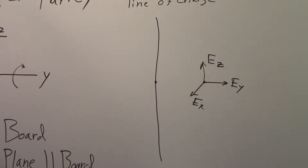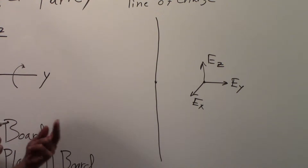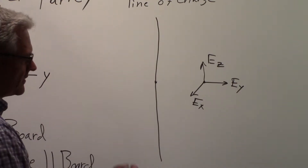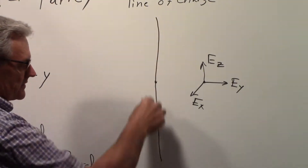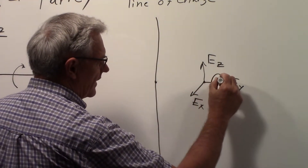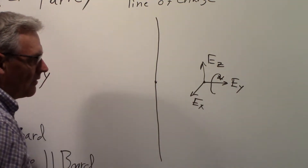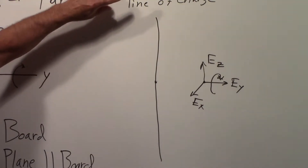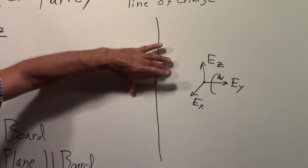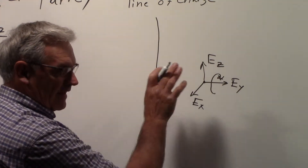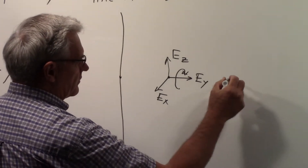What symmetry operations can we do to check out those components? The idea is to do something to the line of charge so that after the operation it looks exactly like what we started with. Since there's no difference between the ends and no difference along the length, we can rotate 180 degrees around the Y-axis. If we take our line of charge and flip it 180 degrees we get exactly the same picture, but we flip our vectors around in that operation.